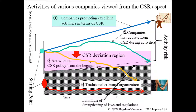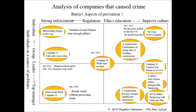I will present activities of various companies viewed from the CSR aspect using this figure. Types of corporate activities are divided into four types indicated by circles and numerical values. Circle number one is a good company. You should be careful of circle number two and number three — these companies are deviating from CSR year by year and will cause CSR problems later. Circle number four is a criminal organization.